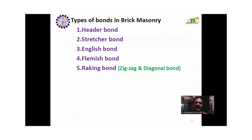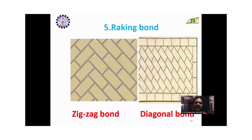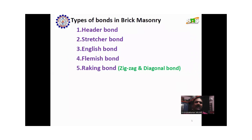Fifth, ranking bond. The image of ranking bond is shown. In this, the first is zigzag bond and the second is diagonal bond. Thus, the types of bond in brick masonry are: Header bond, Stretcher bond, English bond, Flemish bond, and Ranking bond — that is zigzag and diagonal bond.